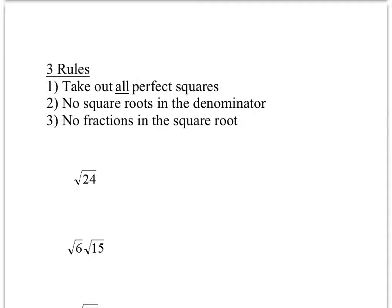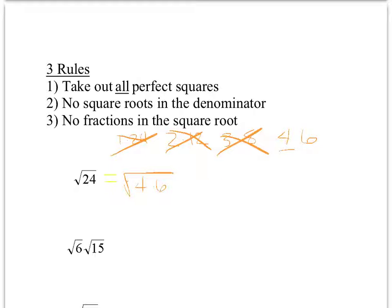First example: the square root of 24. I look for factor pairs: 1 and 24—no perfect squares; 2 and 12—no; 3 and 8—no; 4 and 6—4 is a perfect square! So rewrite as the square root of 4 times the square root of 6. The square root of 4 is 2, and 6 is 2 times 3 with no perfect squares, so the answer is 2 square roots of 6.